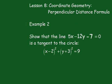Example 2 shows that the line 5x minus 12y minus 7 equals 0 is a tangent of the circle (x minus 2) squared plus (y plus 3) squared equals 9. Now initially you might think you have to use calculus, but a simple understanding of circle geometry will help you here.